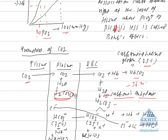Carbonic acid is an unstable compound, so it dissociates into bicarbonate ions and hydrogen ions. Because of the permeability of the RBC membrane, most of the bicarbonate ions — about 75% — diffuse from RBCs to plasma.